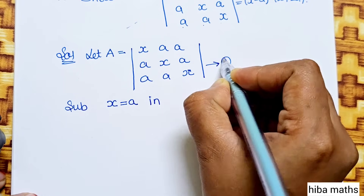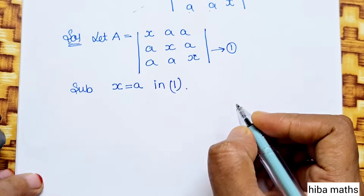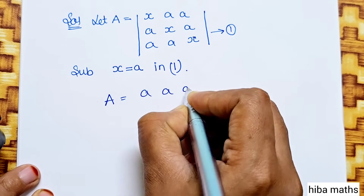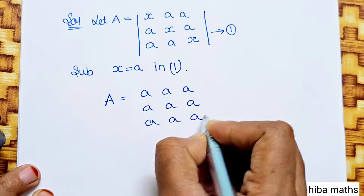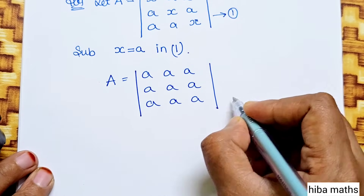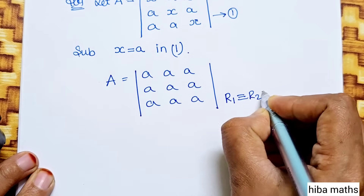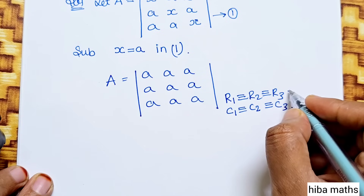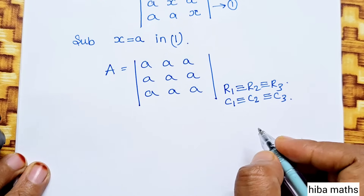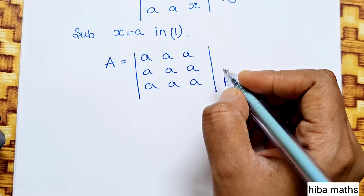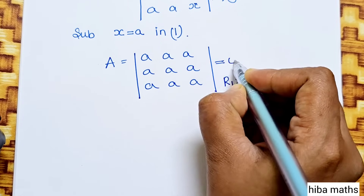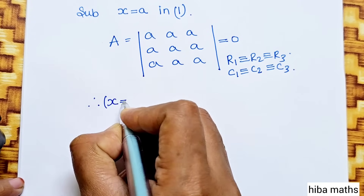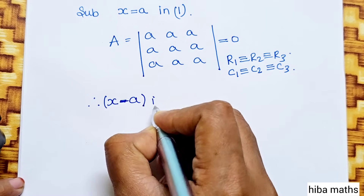In the first determinant, substituting x equal to a: R1 equals R2, R2 equals R3, and C1 equals C2. Either row or column becomes equal. If the determinant has two equal rows or columns, the determinant value is 0. So when x equals a, the determinant value is 0. Therefore, (x minus a) is a factor.